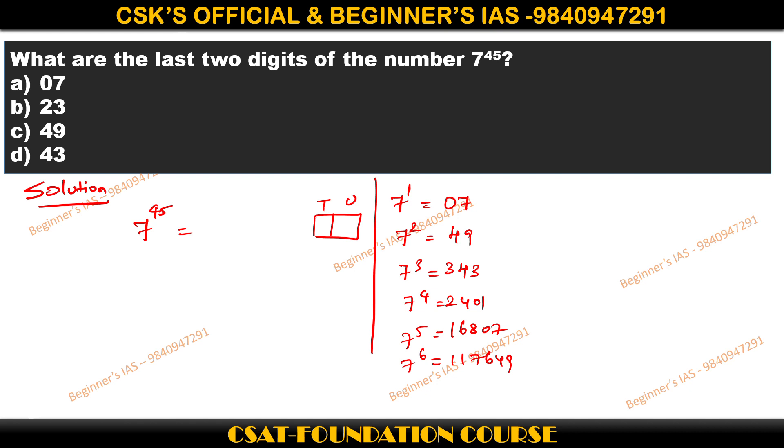With this logic, you can easily identify here. So now listen carefully. After 7 power 4, again it gets repeated. 7 power 5 is nothing but the last two digits of 7, then 7 power 6 is nothing but 49 as the last two digits.